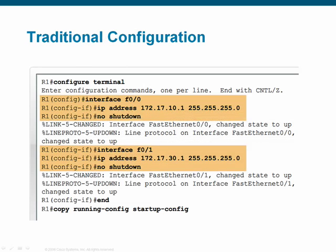When implementing traditional interVLAN routing with multiple physical interfaces, the interface configuration is no different than applying a basic interface configuration. Each interface gets its own IP address on a different subnet. Separate cables are then used to connect each physical interface to its respective VLAN switch port.